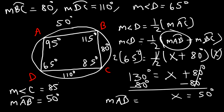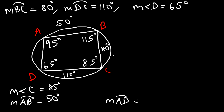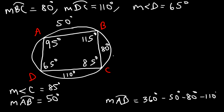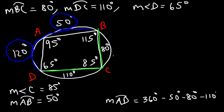Now the last thing we need is the arc measure of AD. All arcs forming a complete circle add up to 360, so arc AD equals 360 minus 50 minus 80 minus 110. That gives us 120 degrees. We can confirm this: angle C is 85, and its intercepted arc DB would be 170, and 170 divided by 2 is 85 — so the answer is correct. Now you know how to calculate angles and arc measures for a quadrilateral inscribed in a circle.